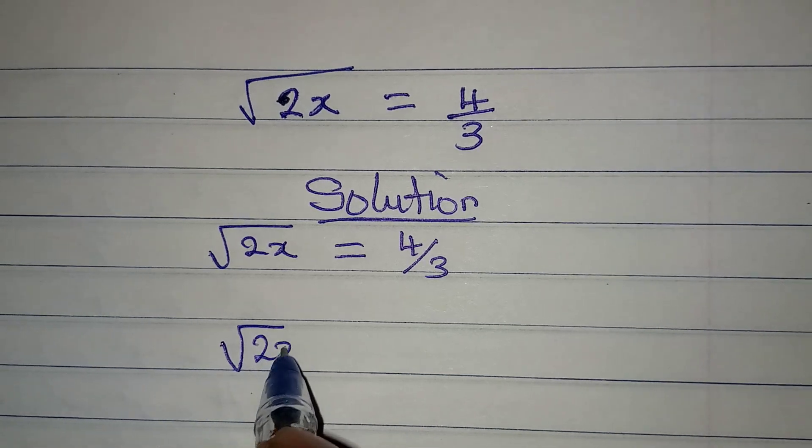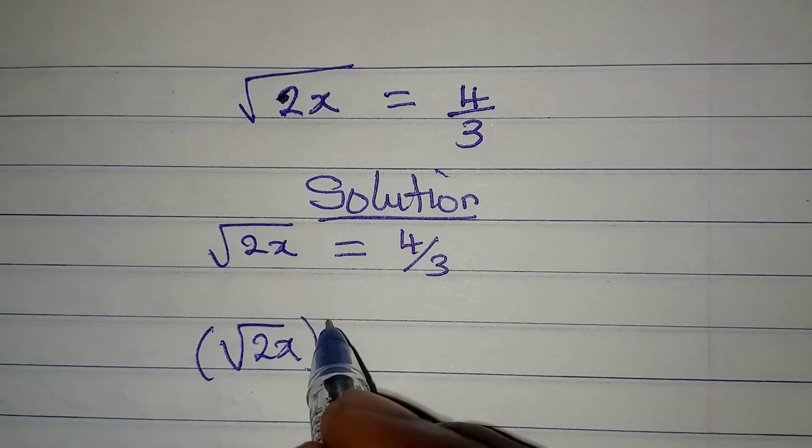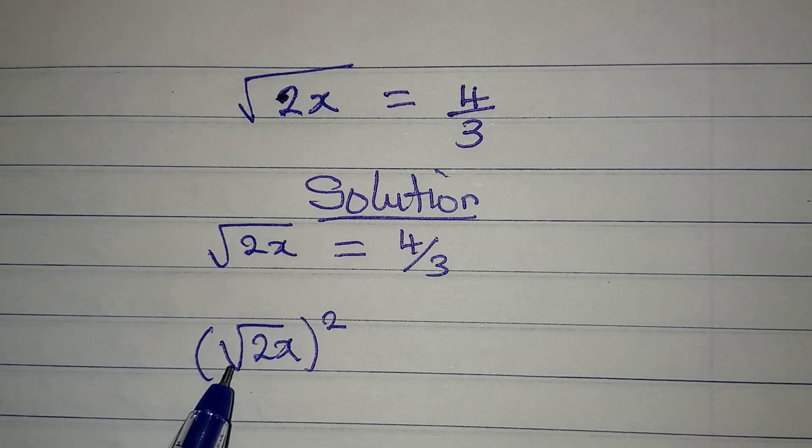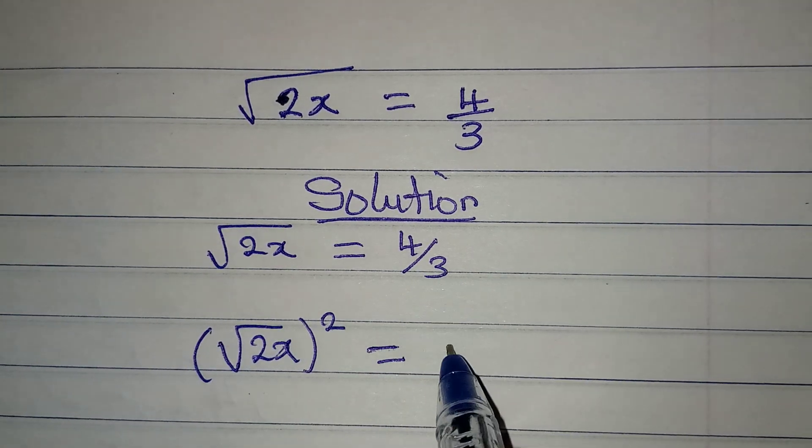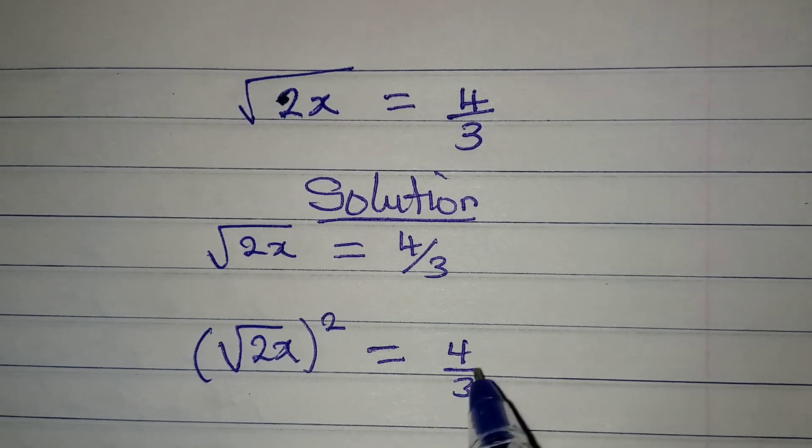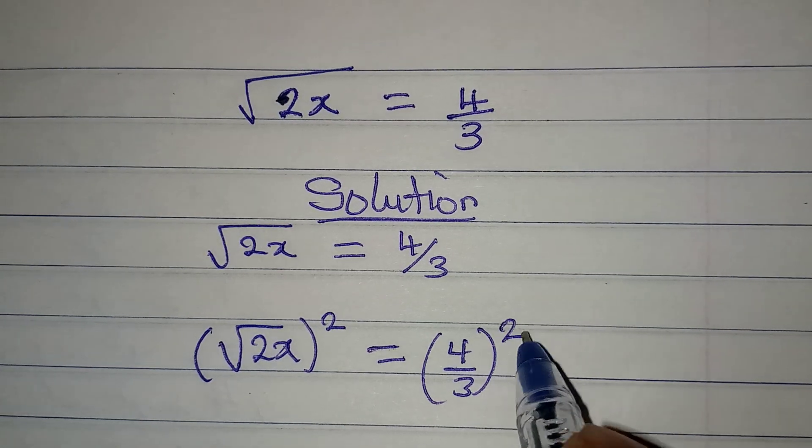Now I'm going to square both sides because I need to remove this square root from here. So on the other hand, I'm going to have 4 over 3, and this will be squared.